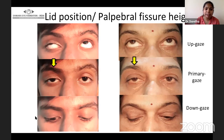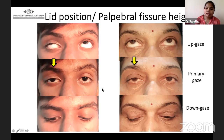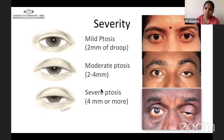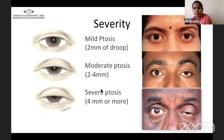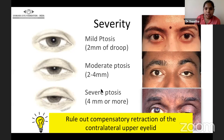In congenital ptosis, the palpebral fissure height increases more in down gaze compared to primary gaze due to failure of relaxation of the LPS muscle. In acquired ptosis, the palpebral fissure height in down gaze is lesser than in primary gaze. This relative difference in vertical fissure height gives an idea of the etiology. On the basis of severity, ptosis is divided into mild (less than 2 mm droop), moderate (around 3 mm), and severe (4 mm or more).